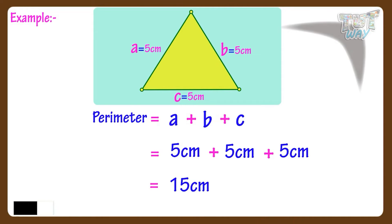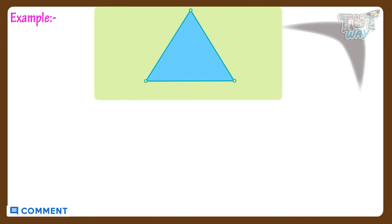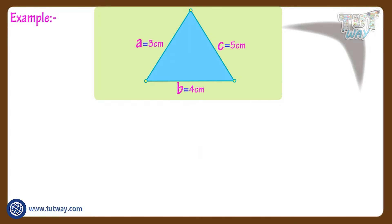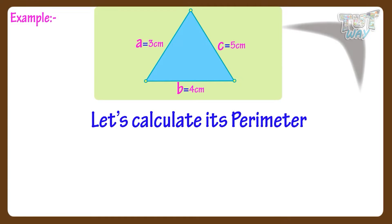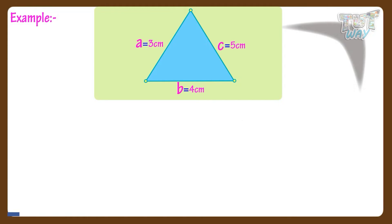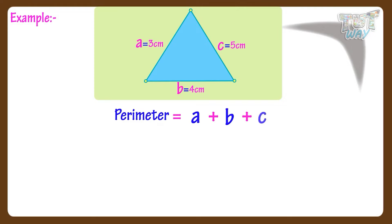Now let's take another example. Here we have a scalene triangle with the lengths of all sides mentioned. Now let's calculate its perimeter. We know perimeter equals A plus B plus C, where A, B and C are lengths of sides of the triangle.